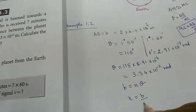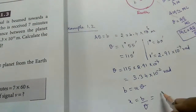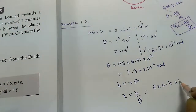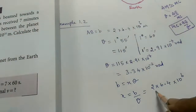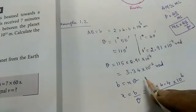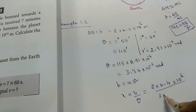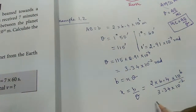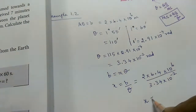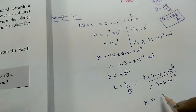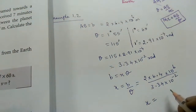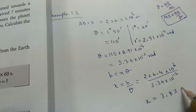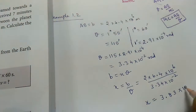The distance x equals b divided by theta. So x equals 1.28 into 10 power 7, divided by 3.34 into 10 power minus 2. Solving this — using logarithms — we get the distance as 3.83 into 10 power 8 meters.